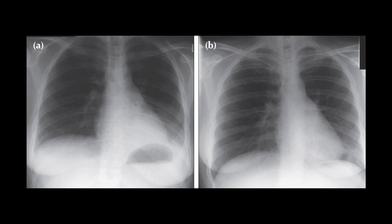Today I'm going to teach you one important thing that you have to look at in every chest X-ray. This sign involves looking at the cardiac borders of the heart and the dome of the diaphragm. Here are two X-rays.